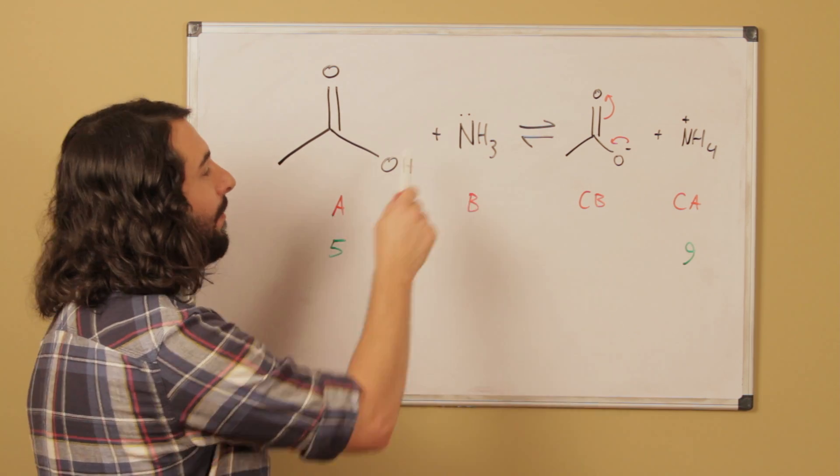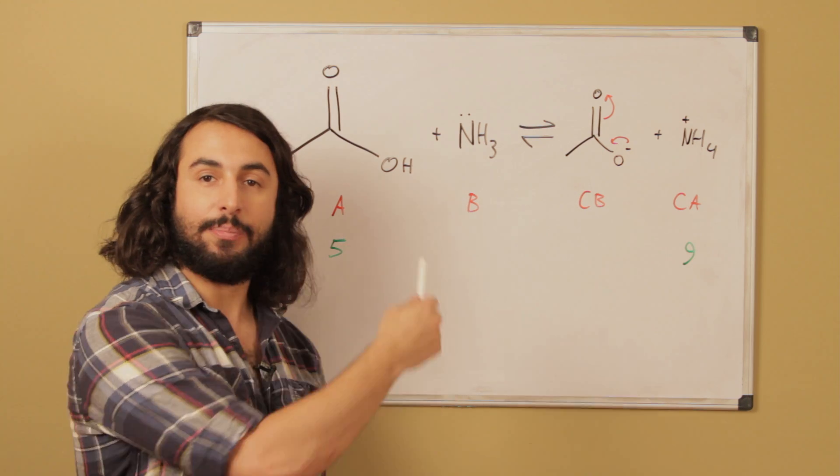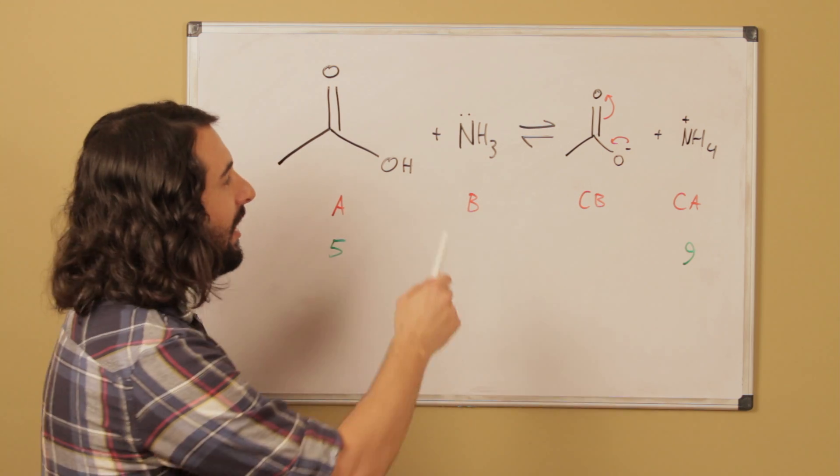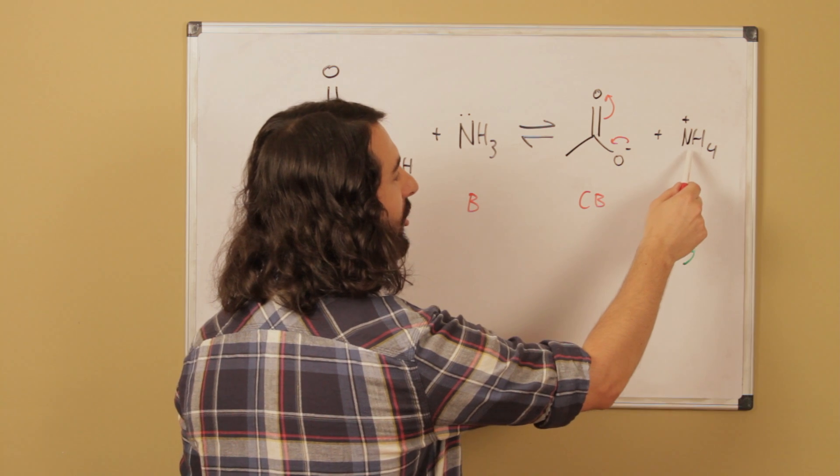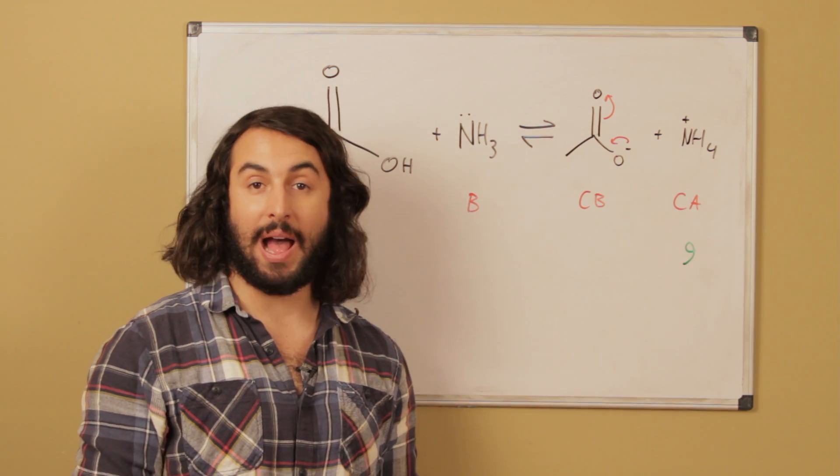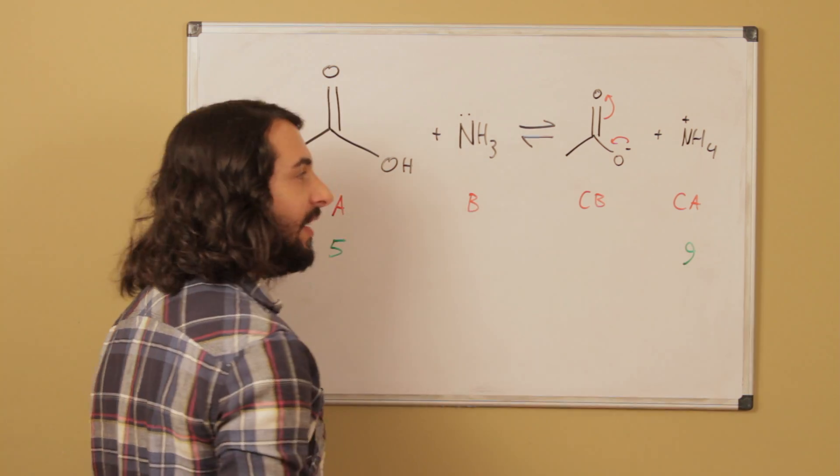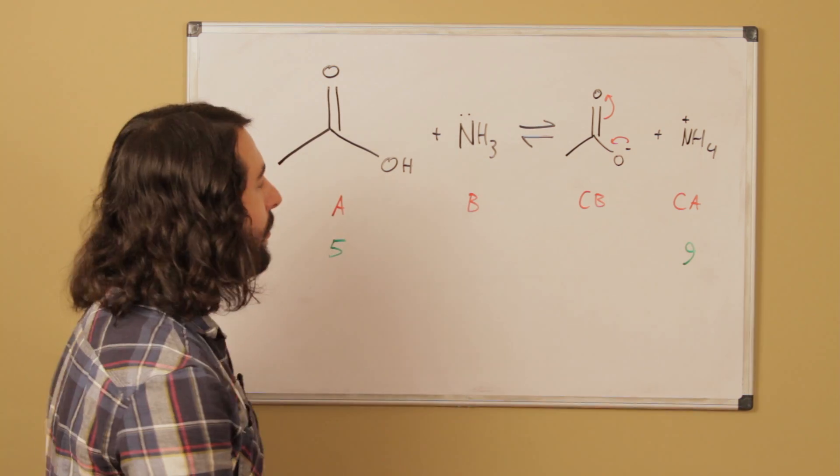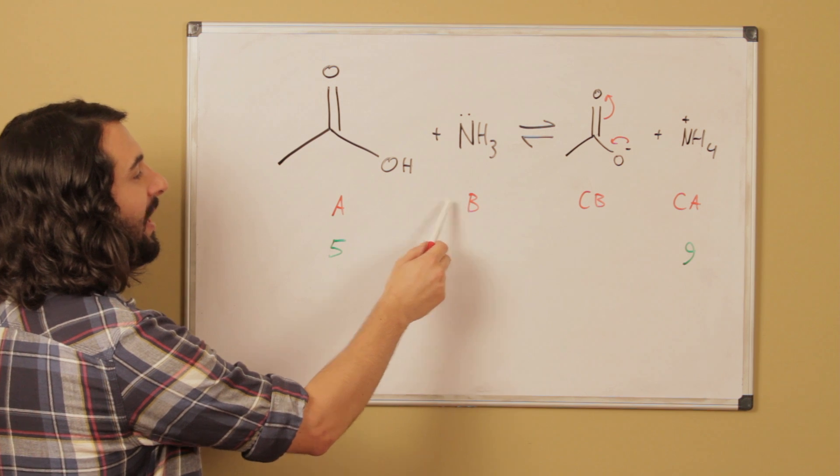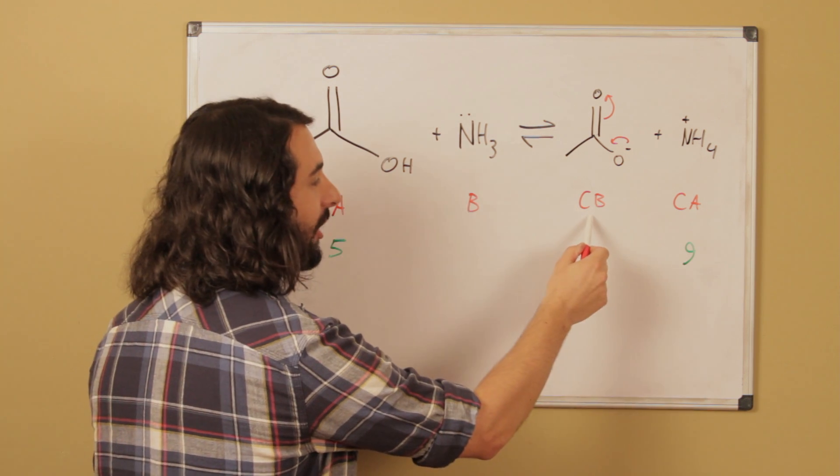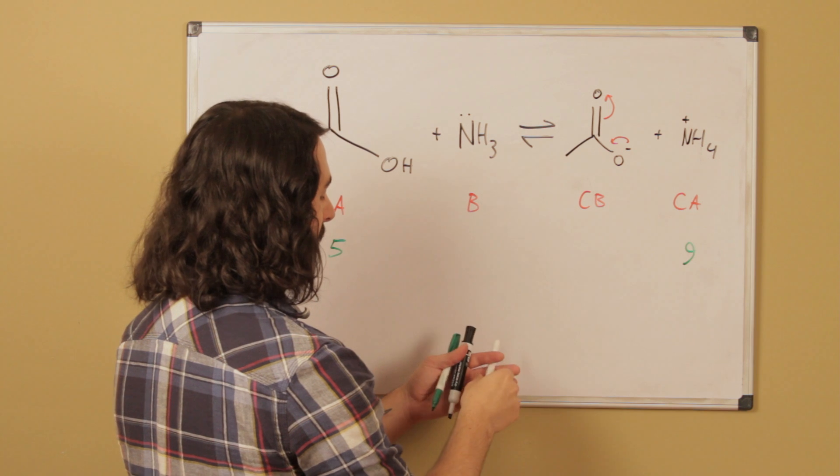If ammonia went ahead and got that proton from the carboxylic acid, that is now going to generate the conjugate acid NH4+ or the ammonium ion. Ammonium has a pKa of around 9. So first of all we're understanding that this is acid-base. The acid becomes the conjugate base and the base becomes the conjugate acid.